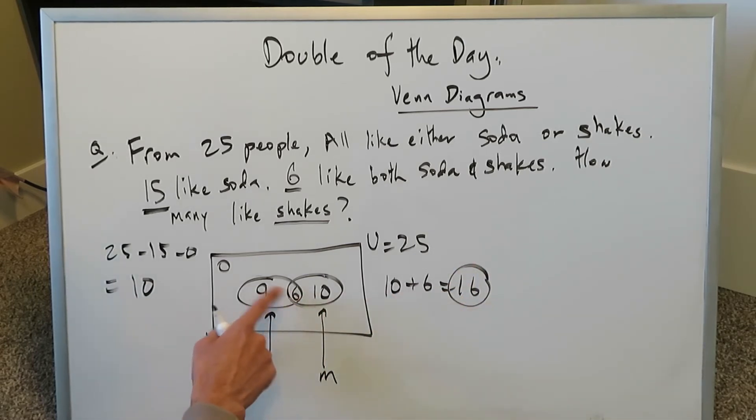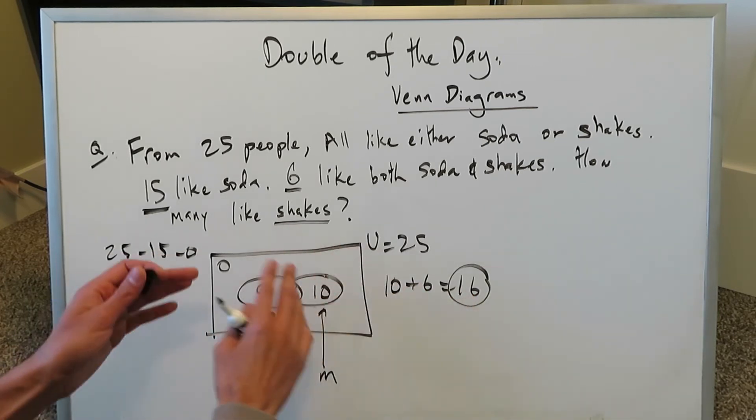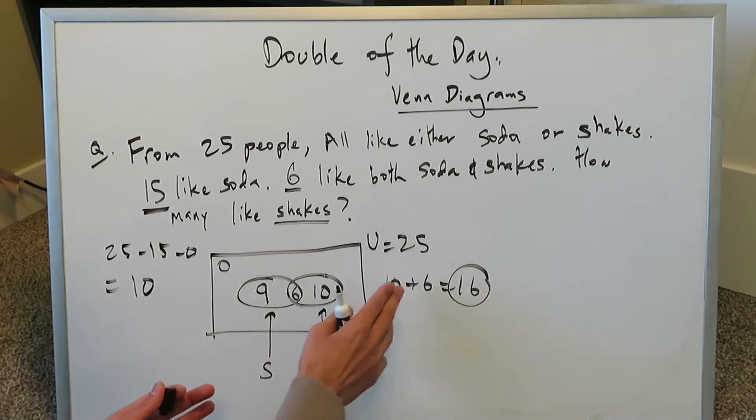It would be 10 plus 6, which would be 16. It just happens to be that out of these 16, 6 also like sodas, but out of these 16, 10 only like milkshakes. So when the question asks how many like milkshakes, your answer is 16 and not 10, because 16 happen to like milkshakes either singularly or in duality with sodas.